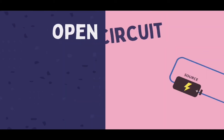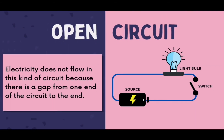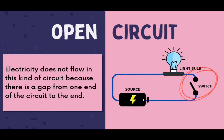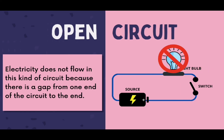On the other hand, an open circuit does not allow electricity to flow through because there is a gap from one end of the circuit to the other end. Makikita natin sa diagram na nakabukas o naka-open ang switch, kung kaya't hindi makadaraan ng electricity mula sa source patungo sa light bulb. Dahil dito, hindi iilaw ang bumbilya because the circuit is open.